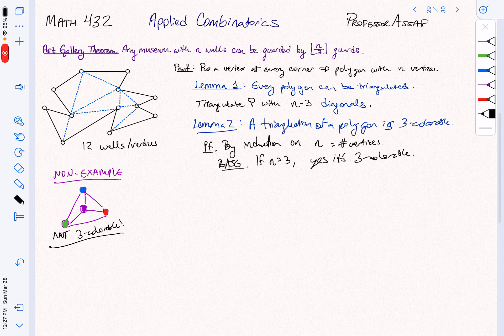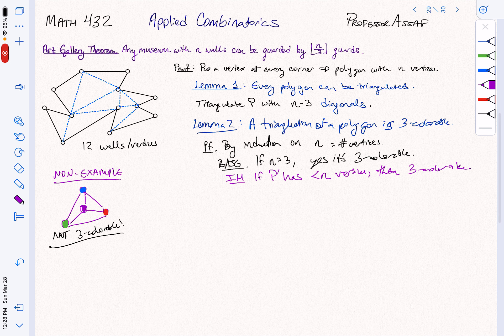So now what we're going to do is, as usual, get our inductive hypothesis in here. Our inductive hypothesis says that if p prime has fewer than n vertices, then it's 3 colorable. So just like with last time, our goal is going to be to cut down our polygon into something smaller. So now we're going to assume that n is greater than or equal to 4.